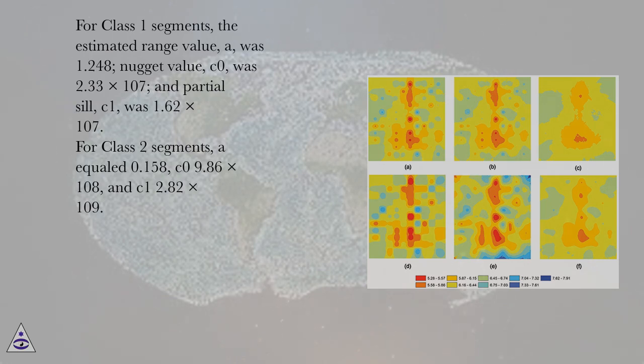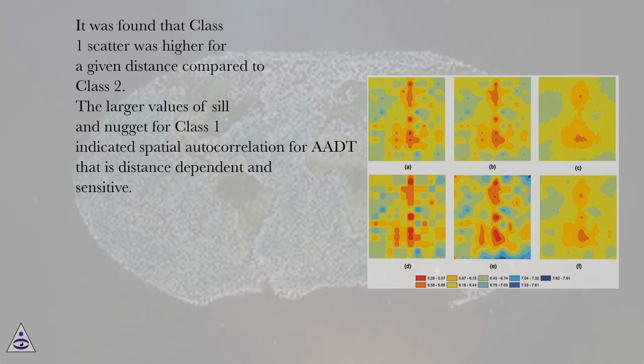For class II segments, A equaled 0.158, C0 was 9.86 times 10^8, and C1 was 2.82 times 10^9. It was found that class I scatter was higher for a given distance compared to class II.